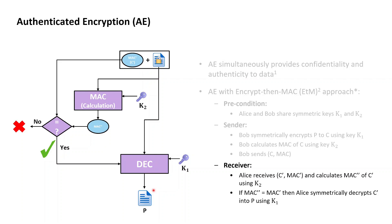Although a sound approach to authenticated encryption, the encrypt-then-MAC approach has the downside of being cumbersome due to the many keys involved, and due to the overall approach essentially being a layered system providing both confidentiality and authenticity — requiring conditional logic to unwrap the layers again on the recipient side. Let's have a look at alternative approaches that improve on the encrypt-then-MAC approach.